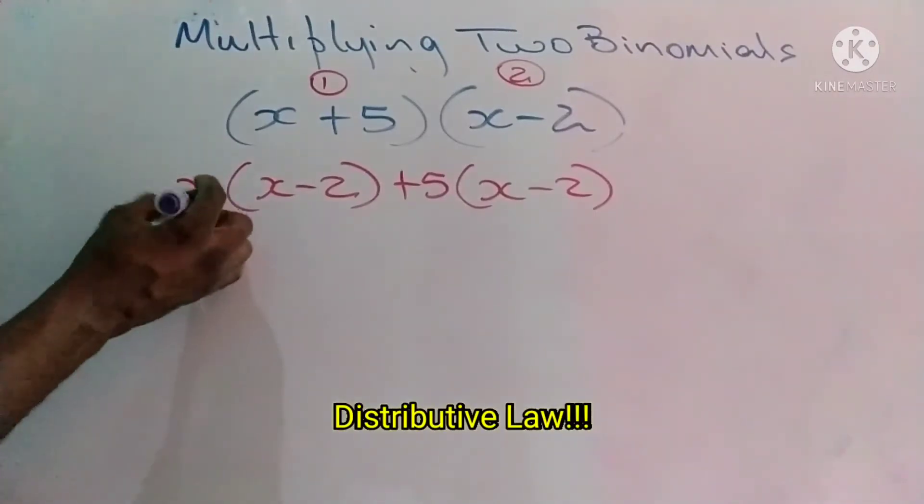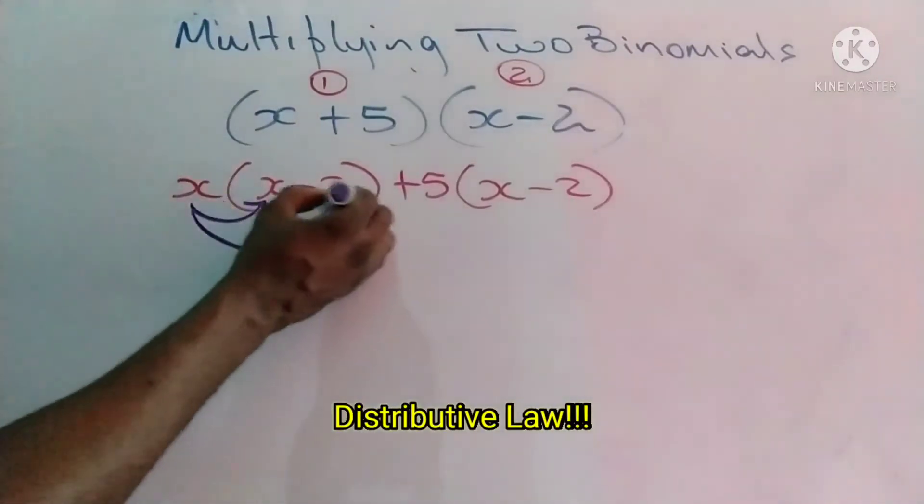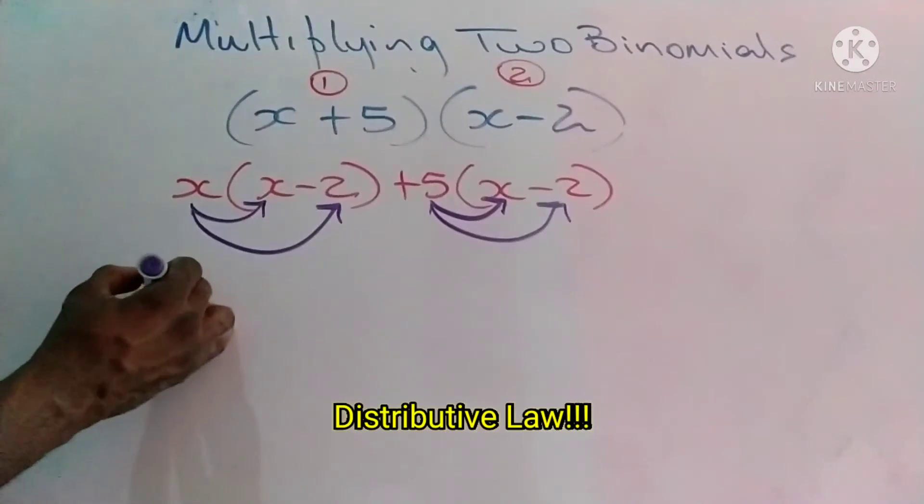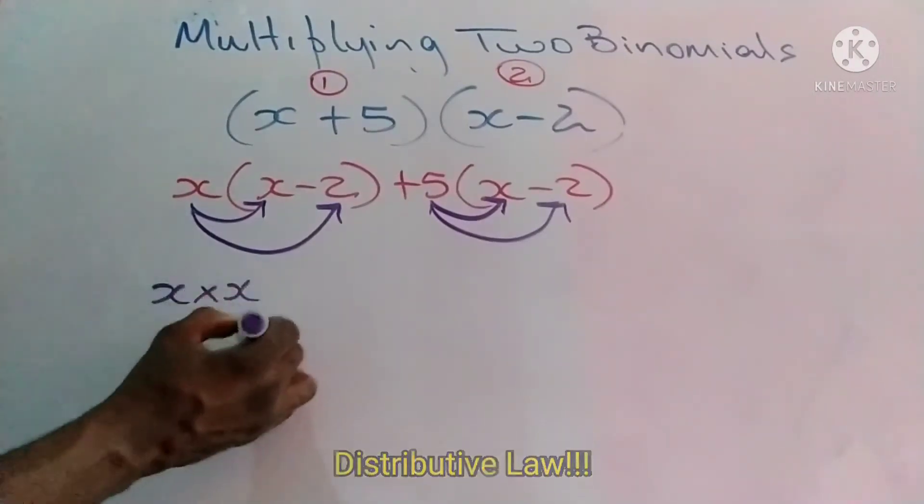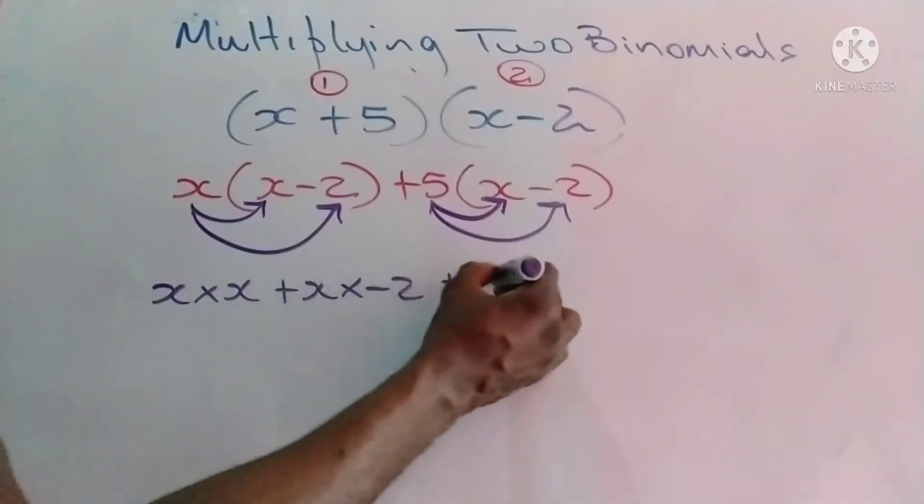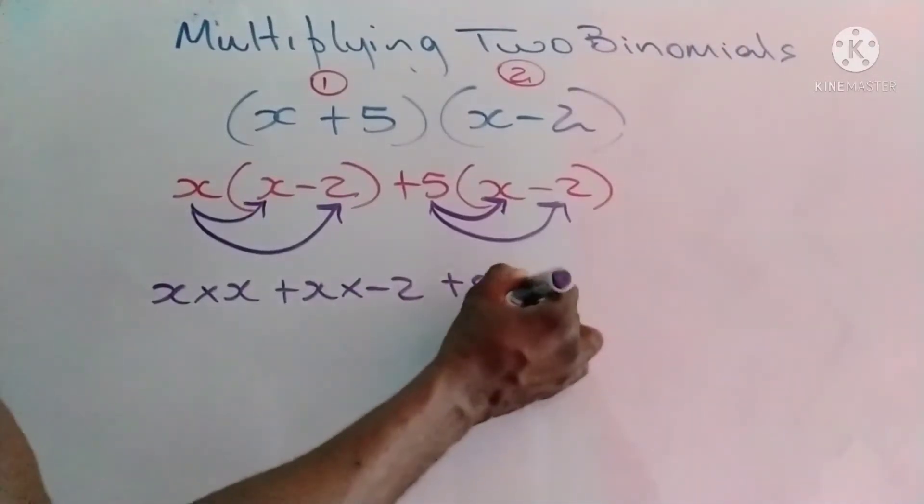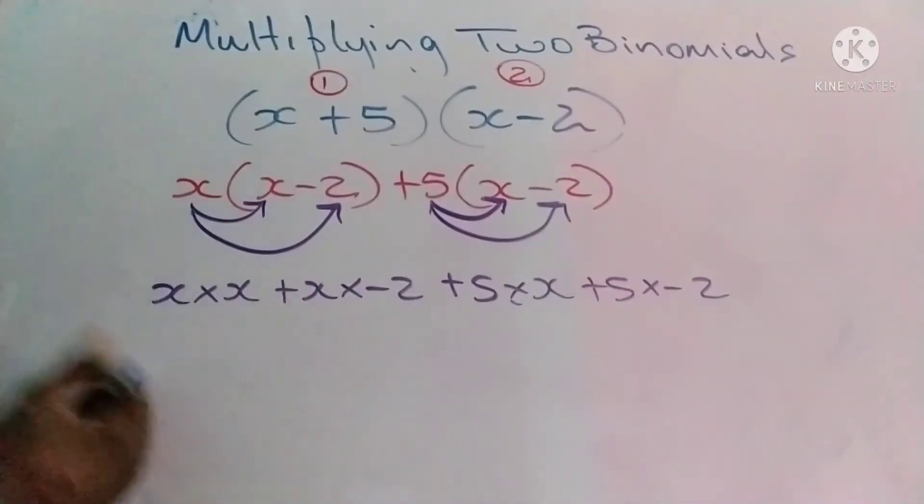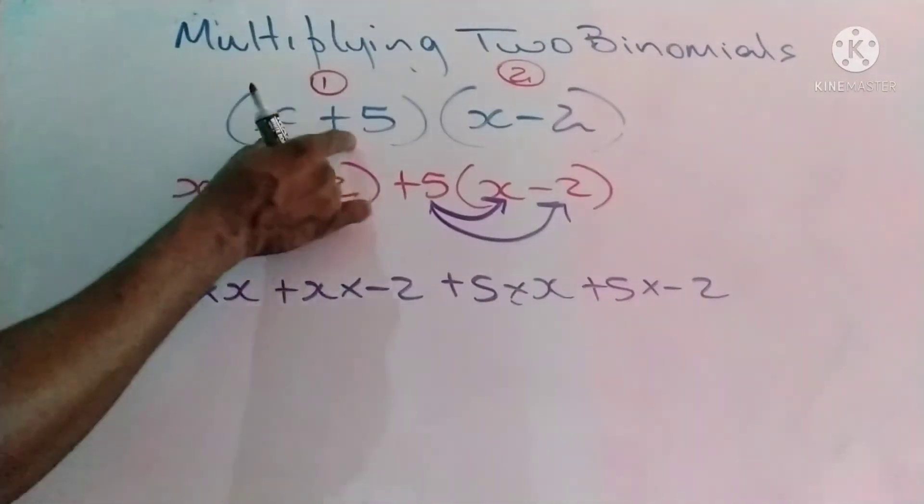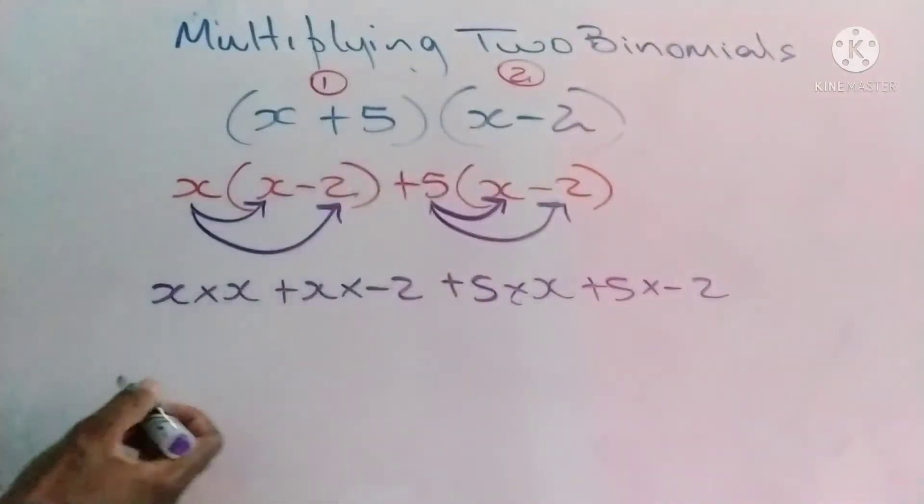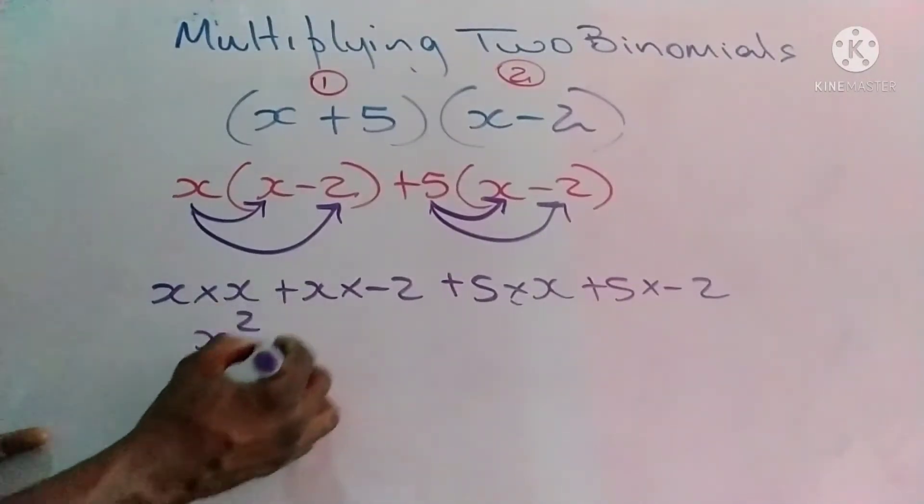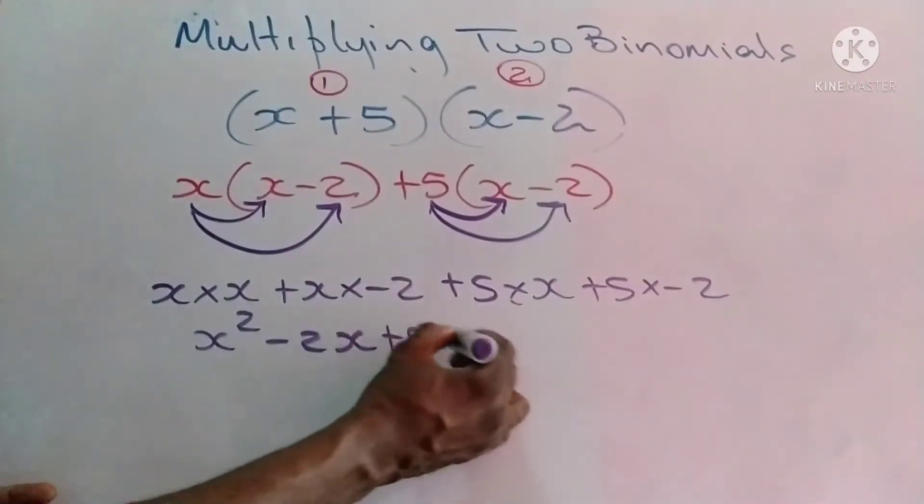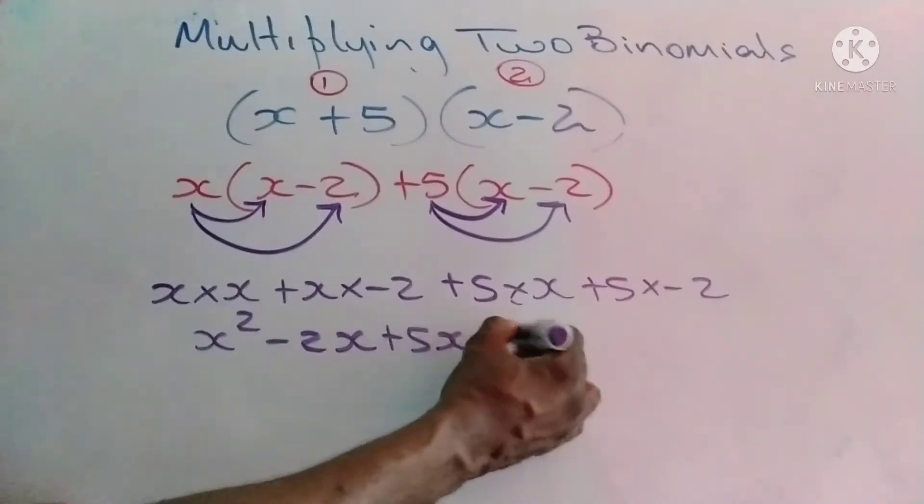x to negative 2, 5 to x, and 5 to negative 2. So x times x plus x times minus 2. We ensure every element from the first bracket multiplies everything from the other bracket. X times x becomes x squared. X times negative 2 becomes negative 2x. 5 times x becomes positive 5x.